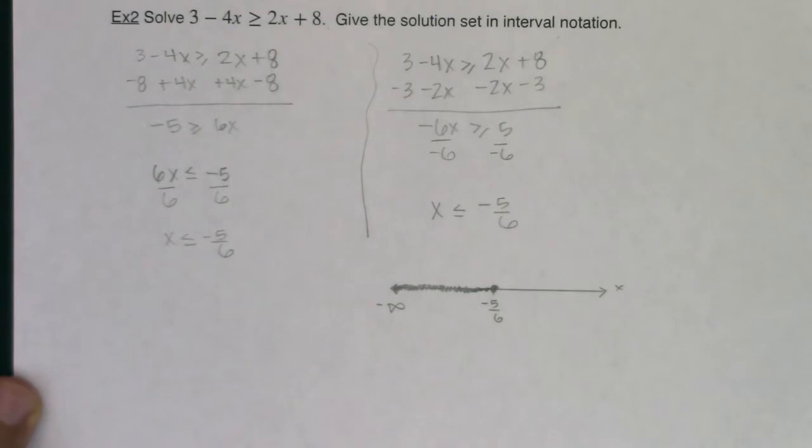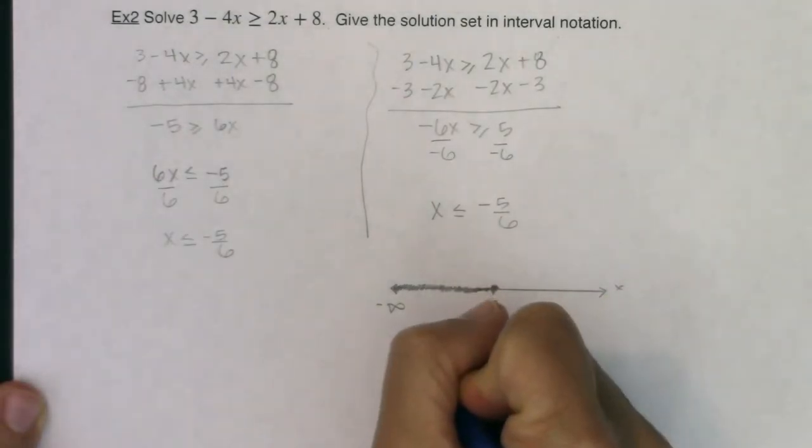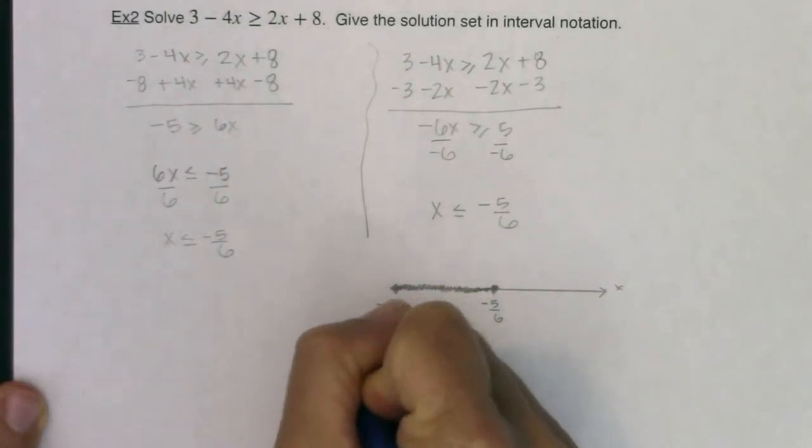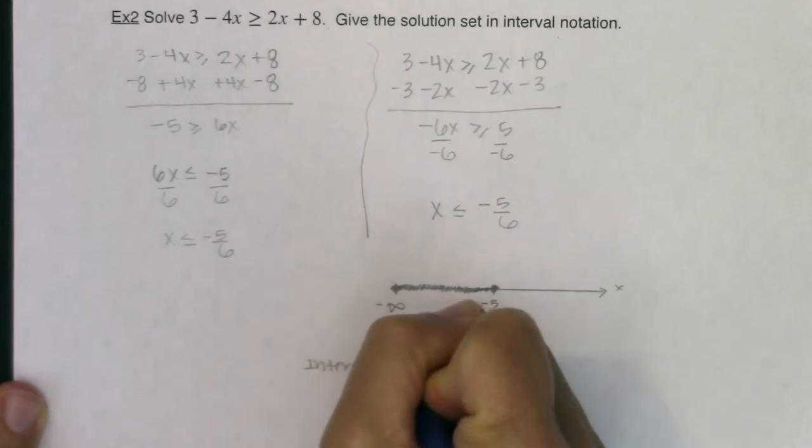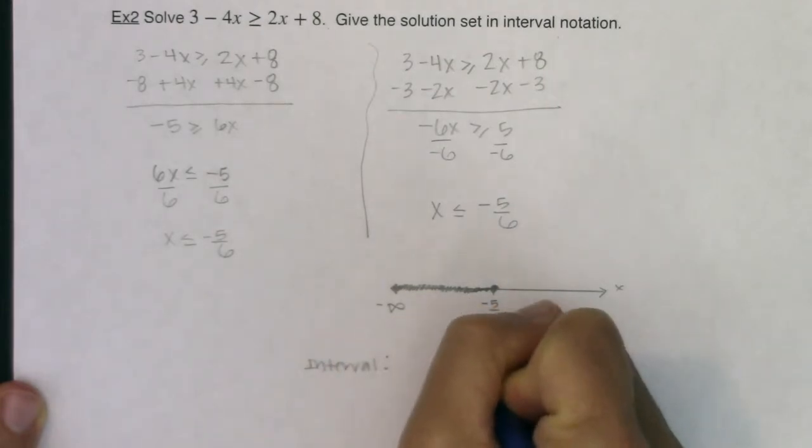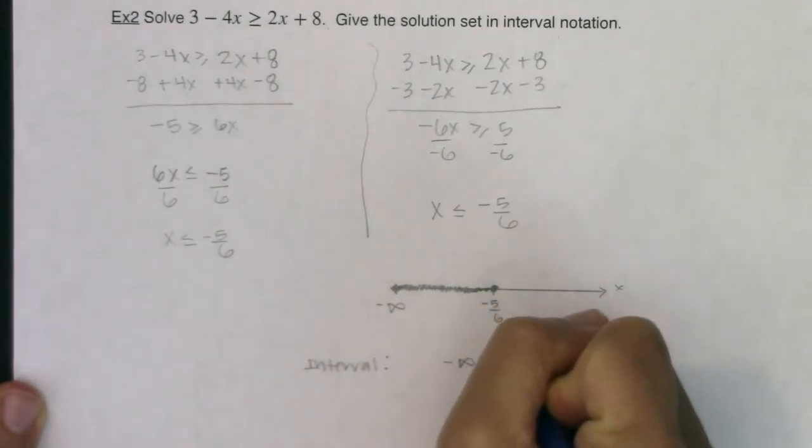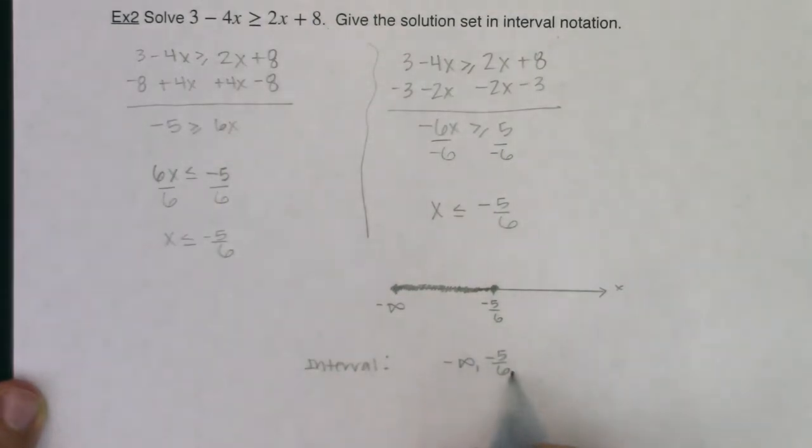So as I go to move this into interval notation, I know my low is negative infinity and my high is negative 5/6. So there's the two numbers, low to high. Great.